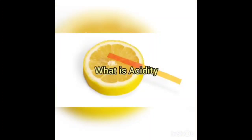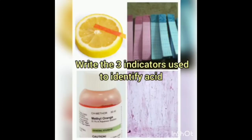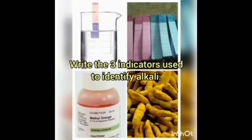What is acidity? Acid is produced in the stomach to support digestion. Sometimes the amount of acid increases in the stomach, and it is called acidity. Write the three indicators used to identify acid: blue litmus paper and methyl orange.